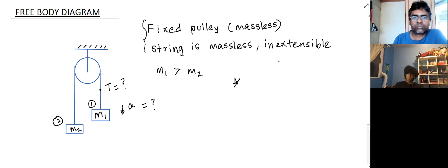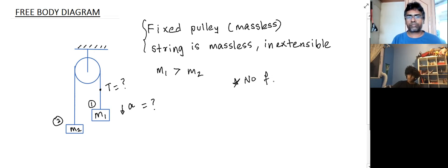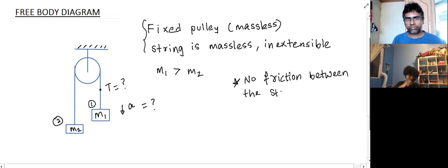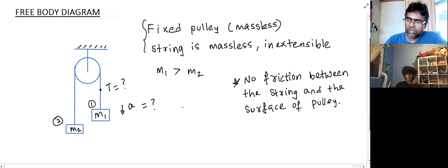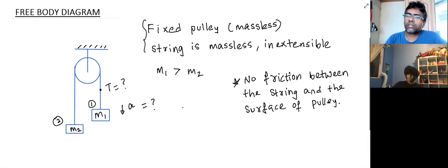There is also another assumption that there is no friction between the surface of the pulley and the string. So all these are assumptions. Now, when we are trying to get these target values, we are going to use Newton's laws of motion, and this free body diagram technique is going to be very, very important.